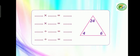Another example: 24, 4, and 6. We have the larger number 24, and the factors of 24 are 4 and 6, because 4 times 6 equals 24. Let's find the relations between multiplication and division for this example. The first one: 4 times 6 equals 24. Another: 6 times 4 equals 24.